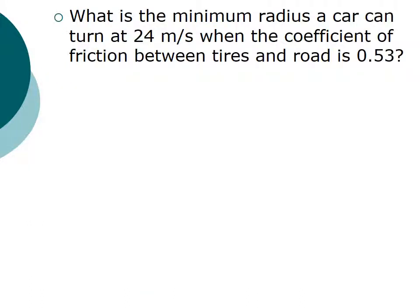So in this problem, we have a situation where a car is driving around a corner, and if it's driving at 24 meters per second and the coefficient of friction between the tires and the road is 0.53, the question is, what is the smallest circle it can drive around? So if it drives around a big circle, it'll be able to make that turn really easy, but there is a point where if you try and turn too tightly, you may not be able to make it.